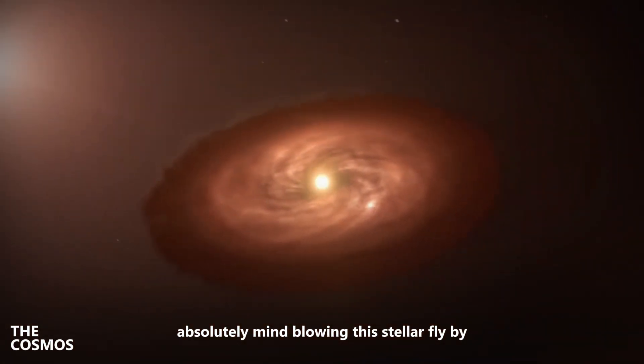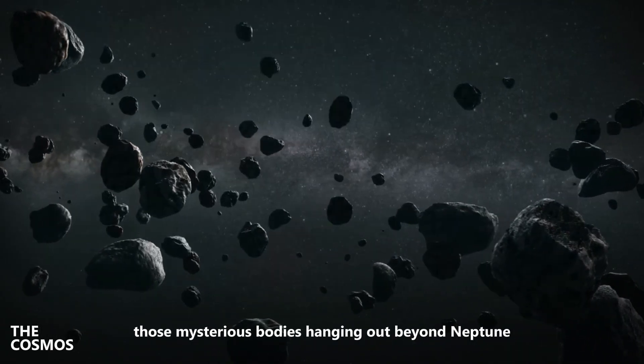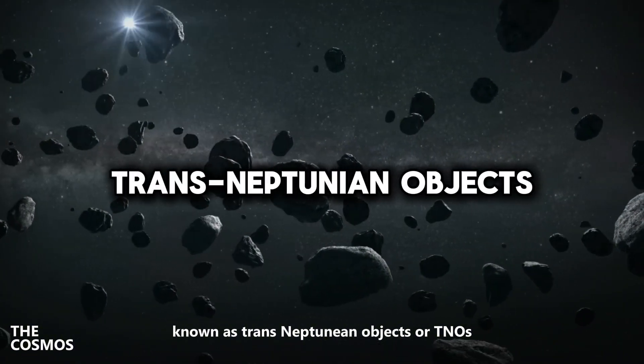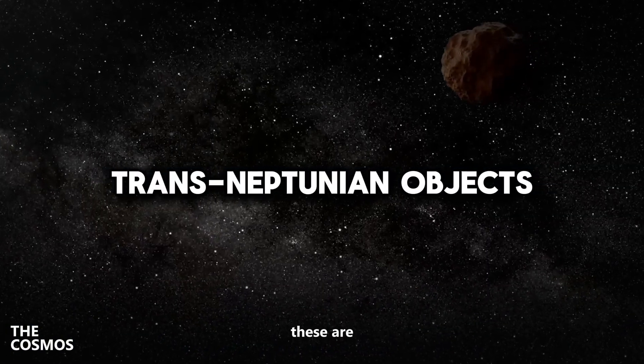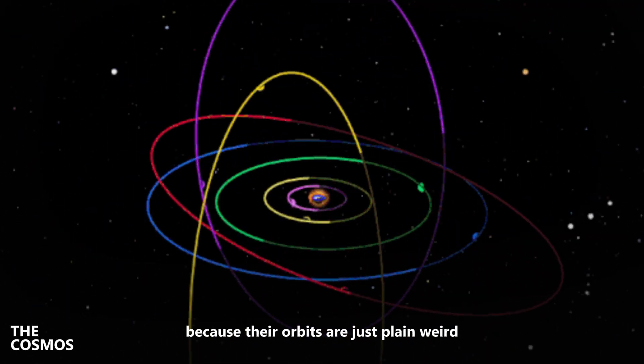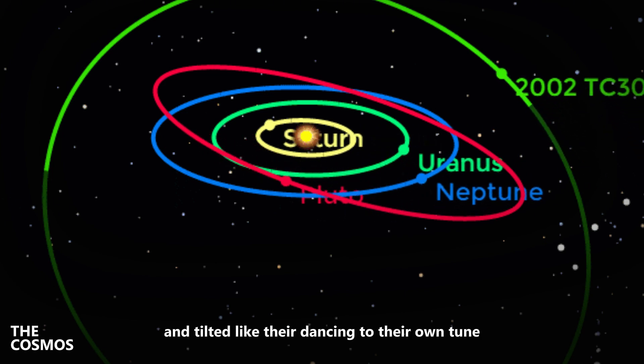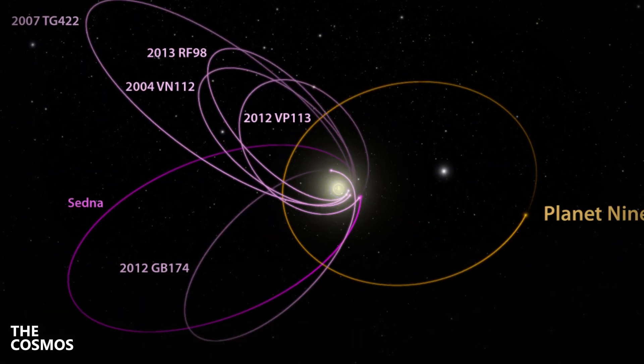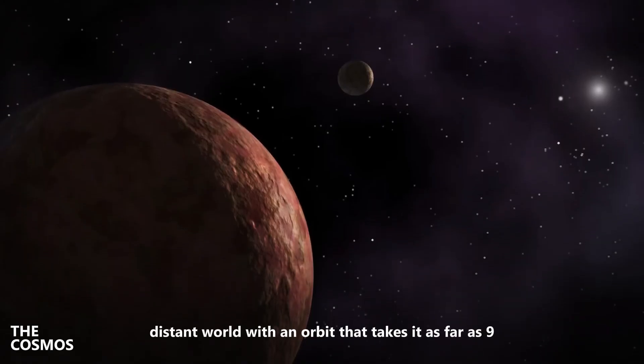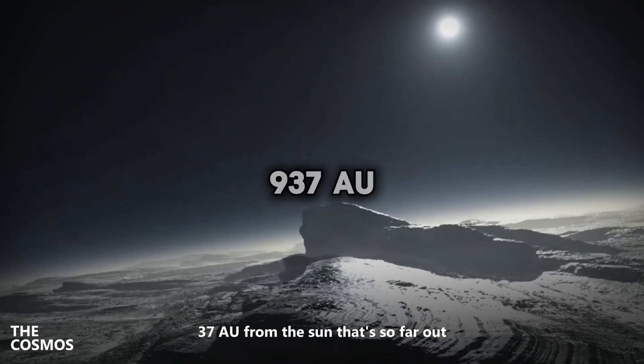This stellar flyby could have stirred up the orbits of distant objects, those mysterious bodies hanging out beyond Neptune known as trans-Neptunian objects, or TNOs. These are objects that have puzzled astronomers for decades because their orbits are just plain weird—eccentric, elongated, and tilted like they're dancing to their own tune. One of the most famous TNOs is Sedna. Imagine a tiny,